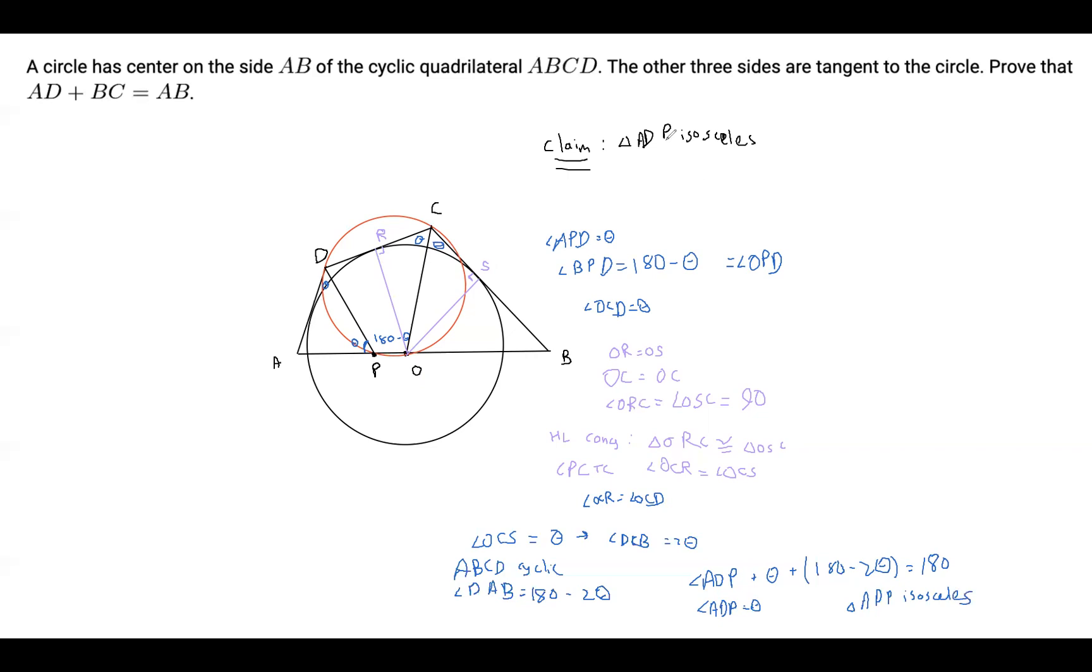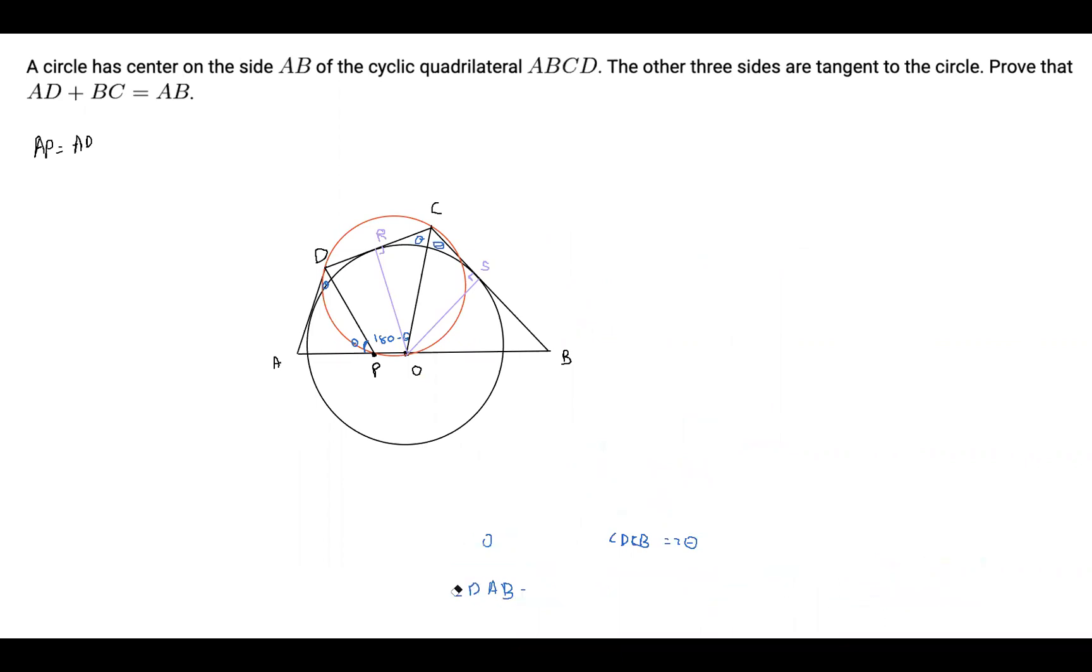So I will write it up here. AP equals AD. Now I'm going to clear some space so I can prove that BC is equal to BP. Okay, so first things first, I will need to draw CP.